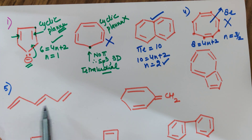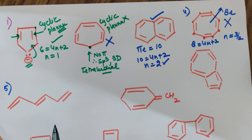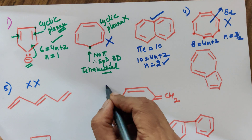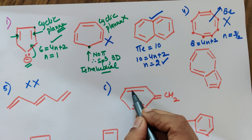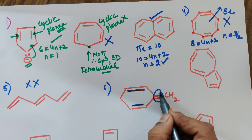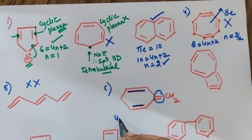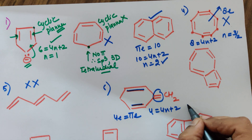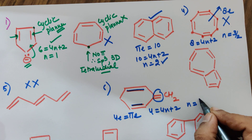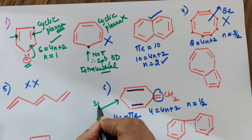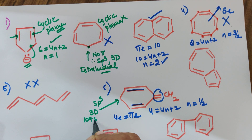Example 5: Can this ever be aromatic? No — because it is not cyclic. There is no point checking planarity or Hückel's rule if it is not cyclic. Example 6: This compound has two pi bonds inside the ring; the pi bond outside the ring is not counted. So 4 pi electrons: 4 = 4n + 2 gives n = 0.5, not a whole number. Additionally, one carbon is sp3, making it three-dimensional and not planar. So this compound is not aromatic.